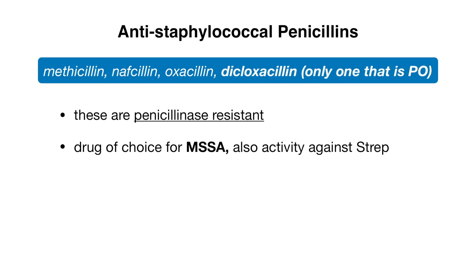Now let's move on to our antistaphylococcal penicillins, which include methicillin, nafcillin, oxacillin, and dicloxacillin. Keep in mind that dicloxacillin is the only one that comes in an oral form. Unlike ampicillin and amoxicillin, these penicillins are penicillinase-resistant and so are great for staphylococcal coverage — that is actually what they are the drug of choice for. They cover MSSA, or methicillin-sensitive Staphylococcus aureus, but also have some activity against strep.